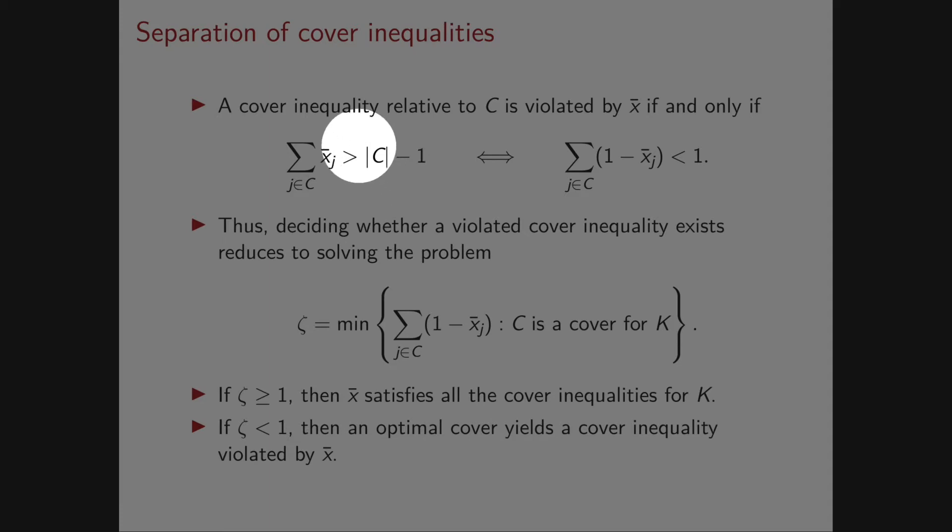We can just bring the cardinality of C on the left and bring it inside the sum. So we obtain the sum for j in C of (1 - x̄ⱼ), strictly smaller than 1.